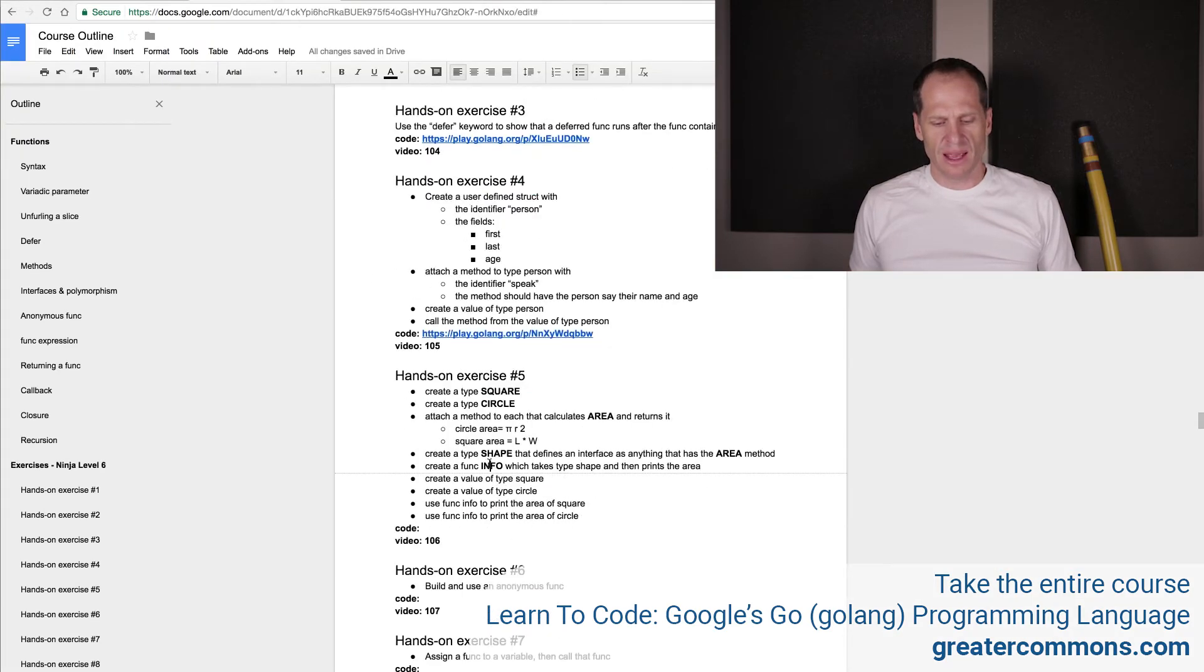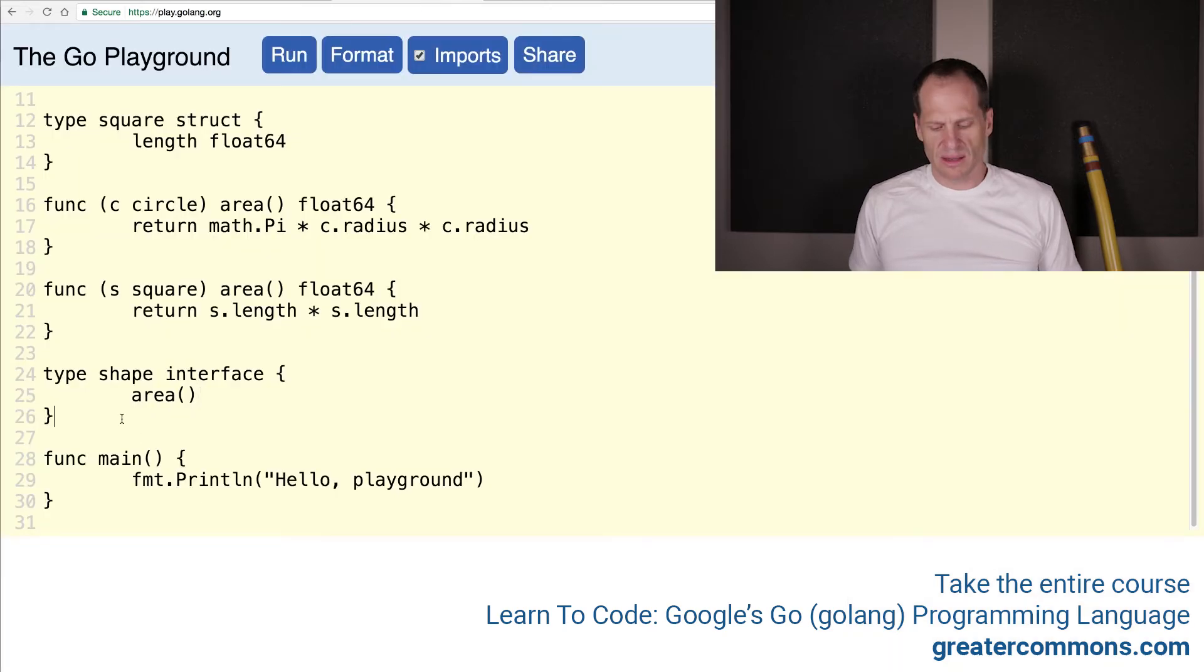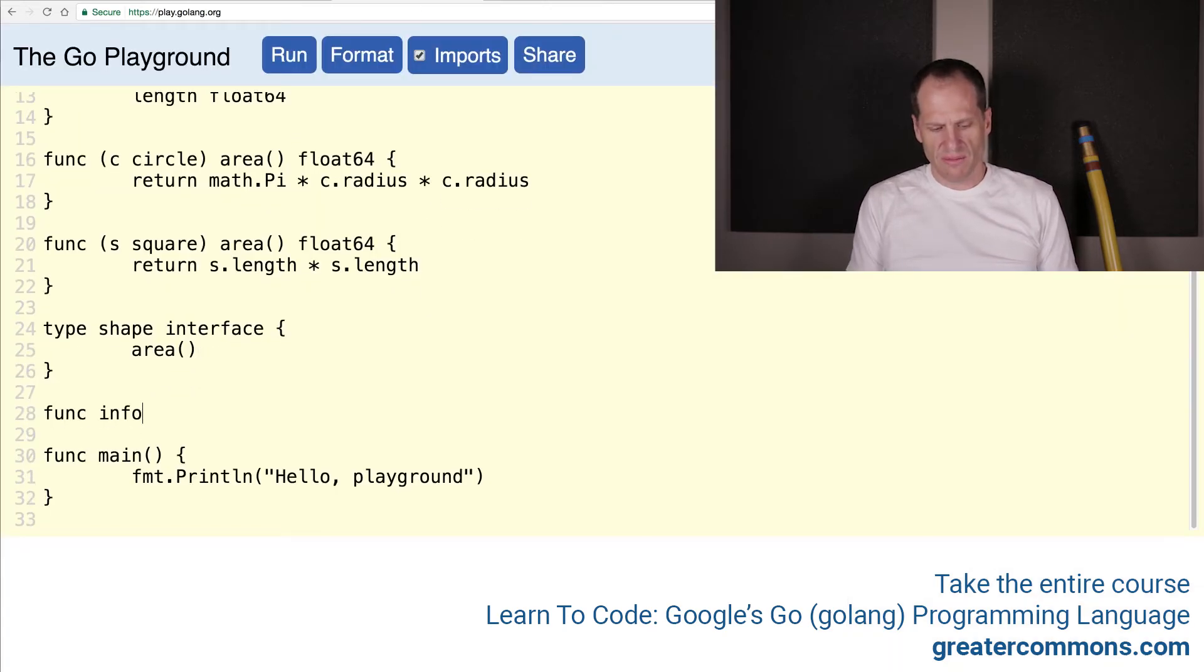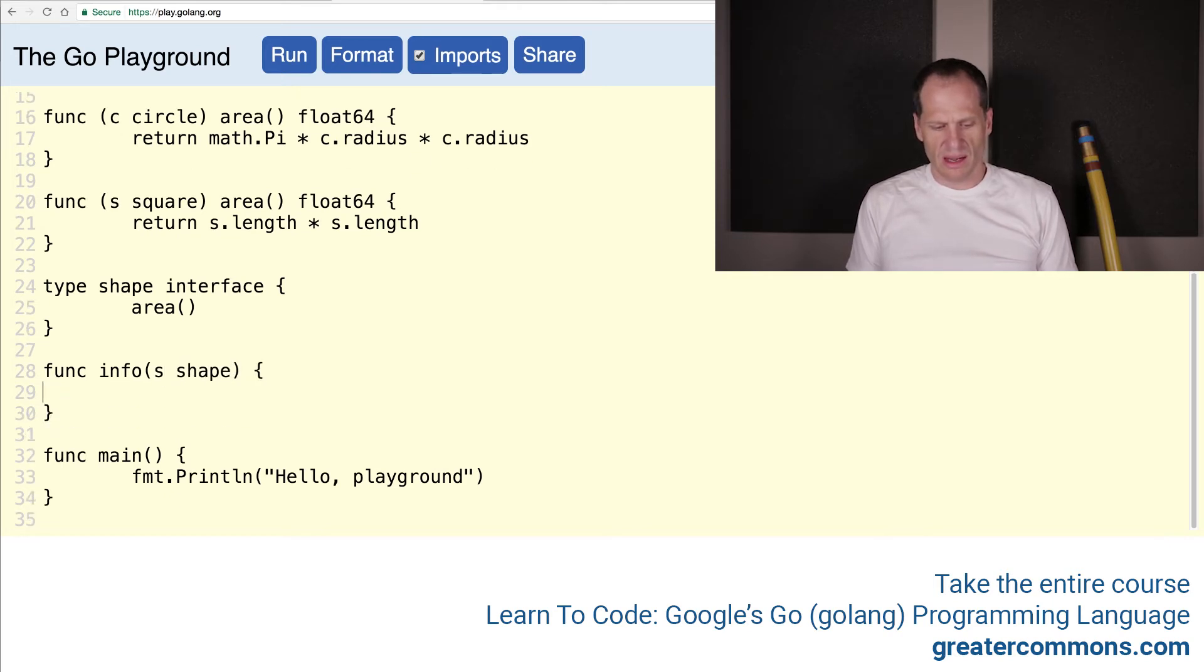And create a func info, which takes type shape and then prints the area. And so func, func info is going to take a shape and it's going to print the area. So format dot print line, s dot area. So call that, calculate the area. It'll return it and put that value here and then print it out. Isn't that a beautiful solution?